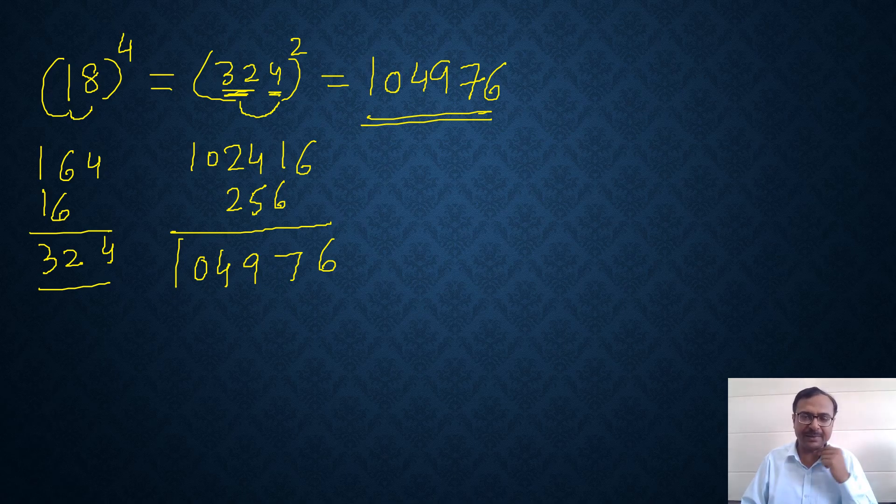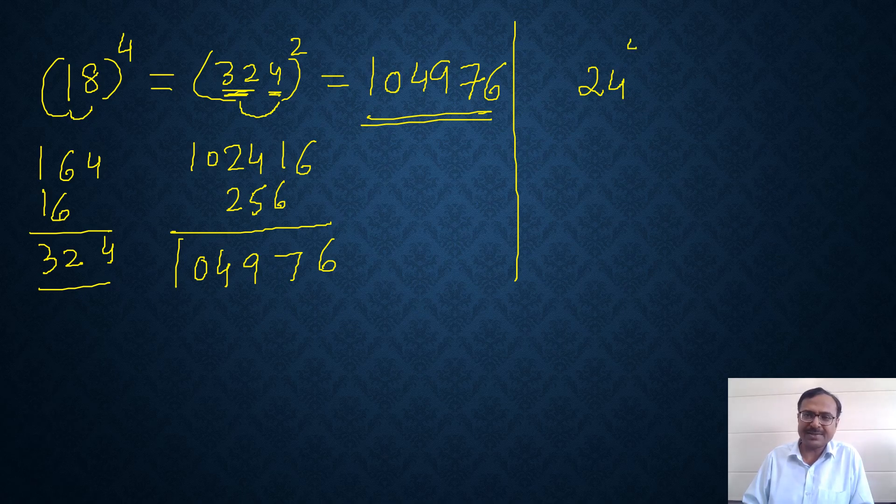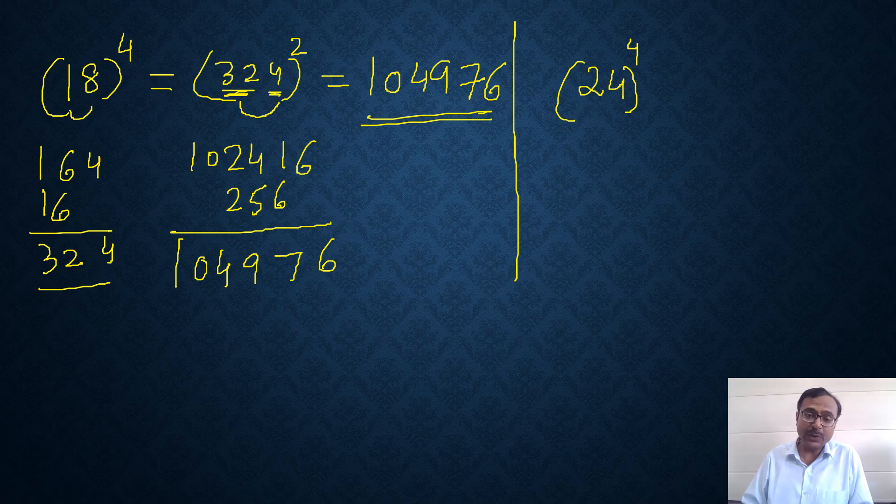I'll give you some DIY questions. I'll give you a number like 24 raised to power 4. You can try this. I think it's not going to consume much time, and if you get the answer correct, it should be 3096576.